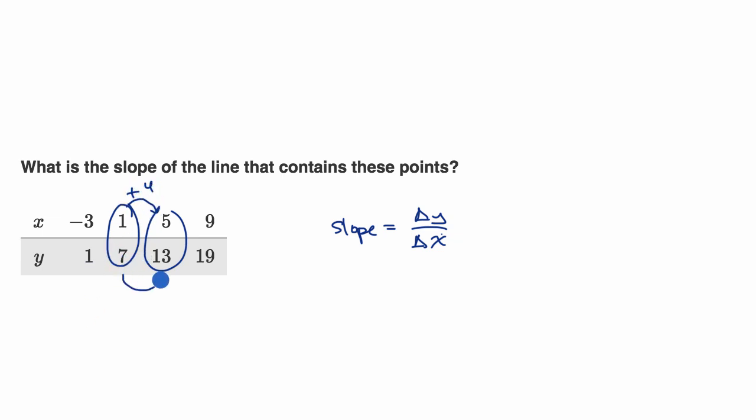And what's our change in y? To go from seven to 13, we added six. So our change in y is six when our change in x is four. And I got the signs right. In both cases, it's a positive. When x increases, y increased as well.